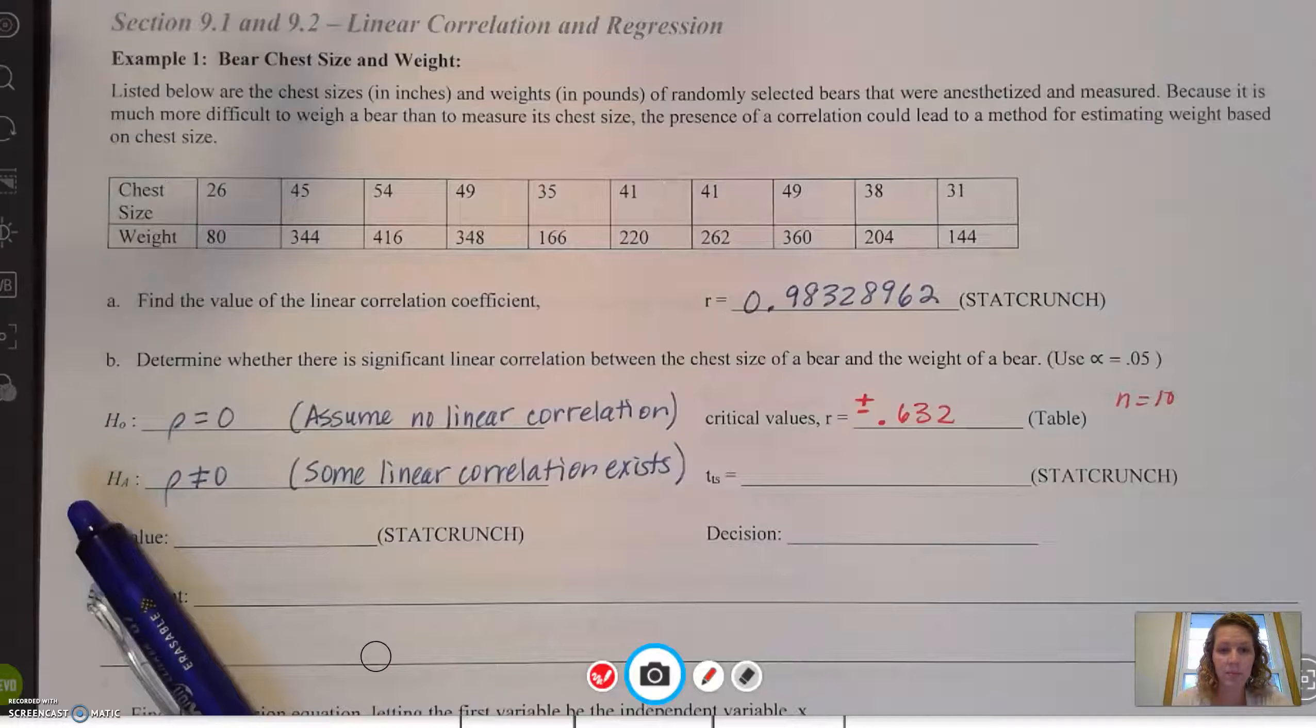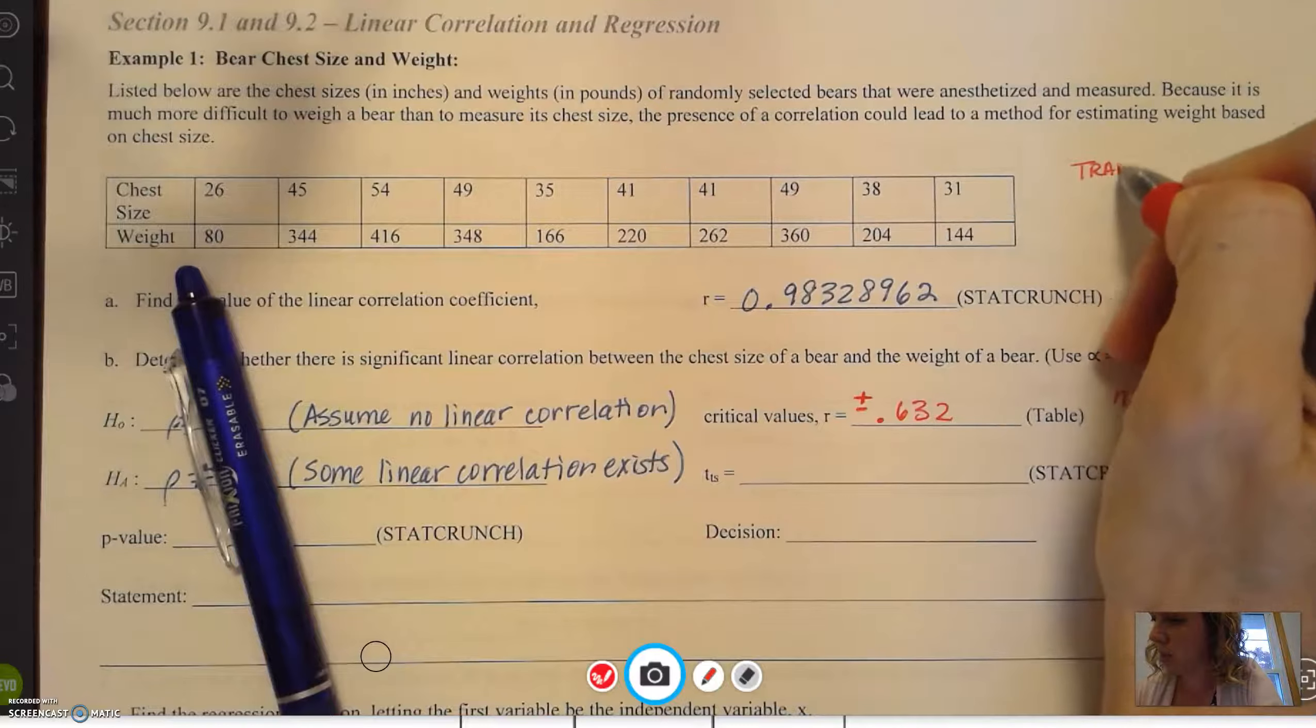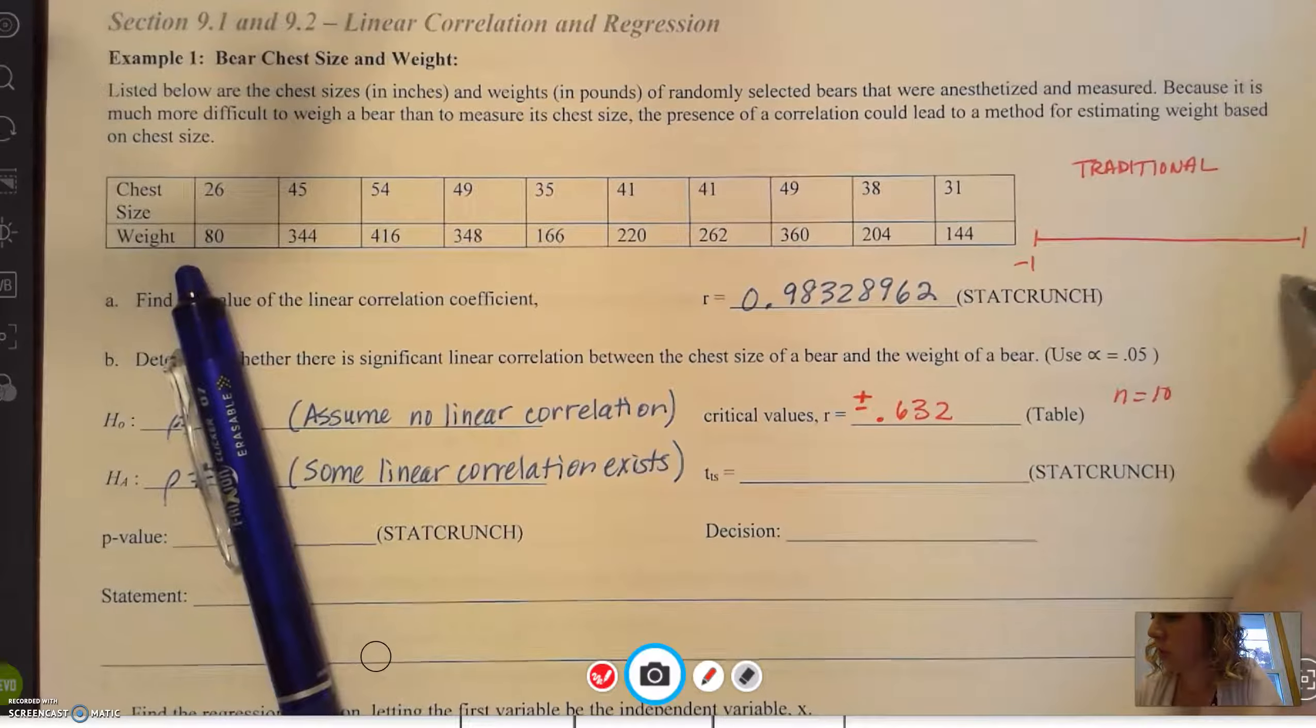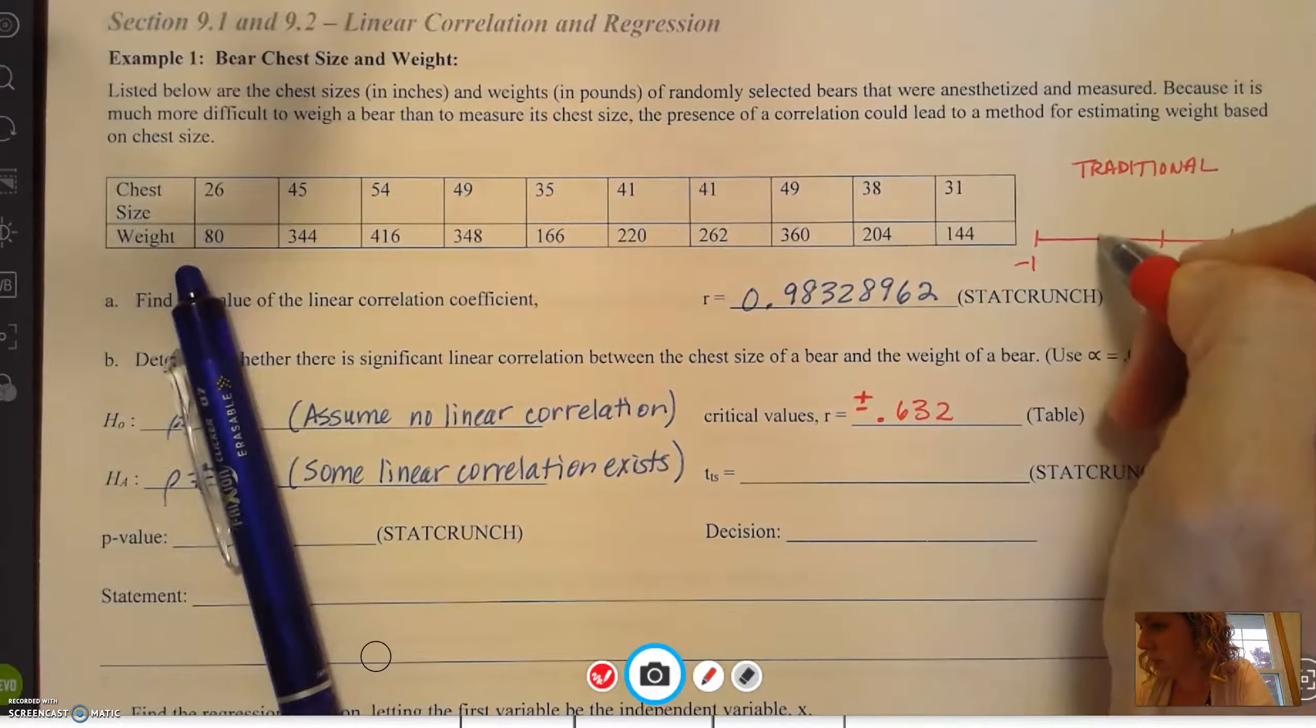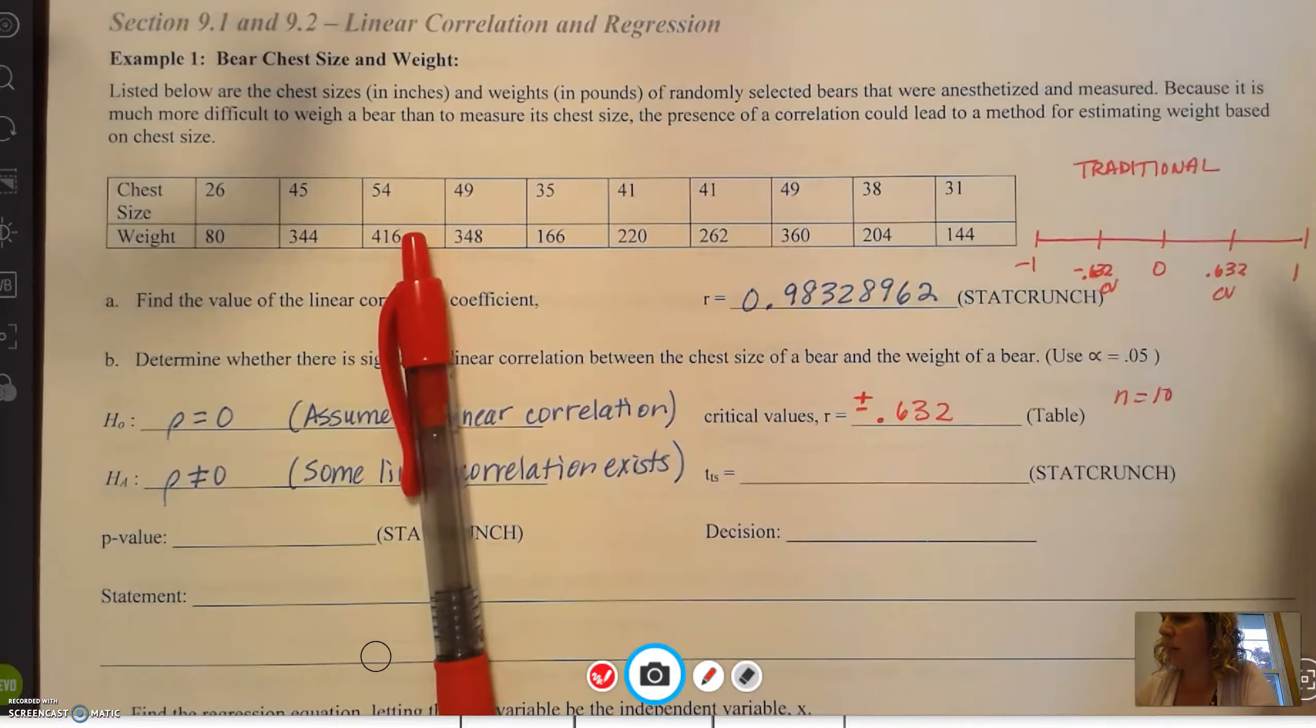Now, according to the traditional method, we'll look at the scale from negative 1 to positive 1, 0 being in the middle. The critical values are positive 0.632 and negative 0.632. According to the correlation coefficient 0.98, this is our r value, our correlation coefficient.